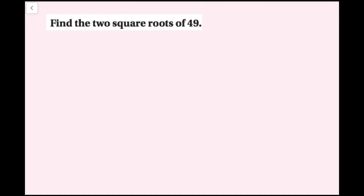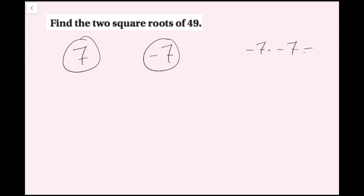For this example we're going to find two square roots of 49. Remember, every positive number has both a positive square root and a negative square root. We want to think: what number multiplied by itself equals 49? Well, 7 times 7 is 49, so one square root is positive 7. There's always a negative square root too. If the positive square root is 7, then the negative square root is negative 7, because negative 7 times negative 7 — a negative times a negative is a positive — and 7 times 7 is 49, so that's 49.